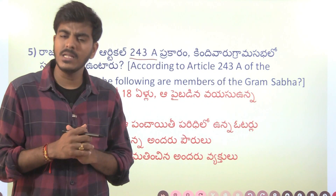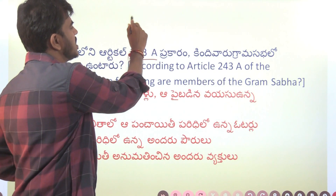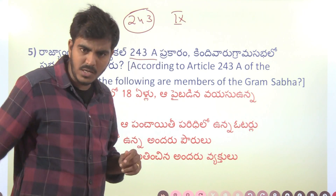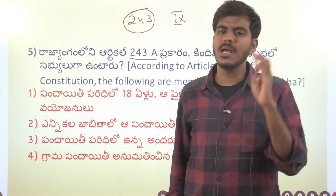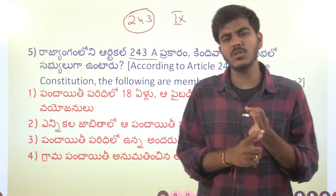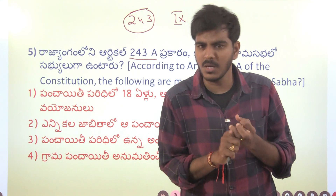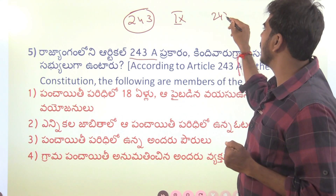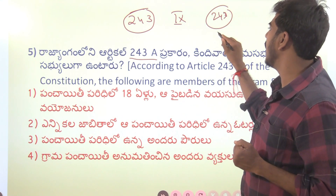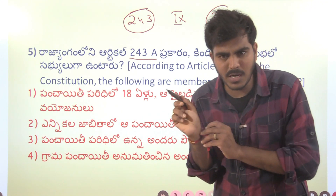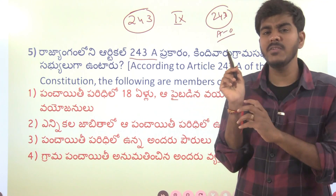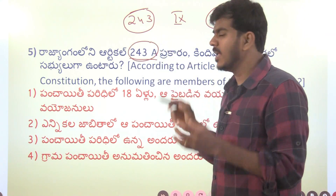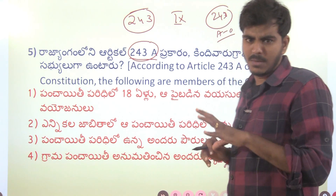Article 243 of the constitution deals with local self-government. Part 9 of the constitution deals with Article Number 243. We are specifically talking about Article 243 and 243A, which covers panchayati raj institutions.